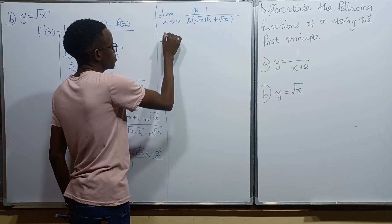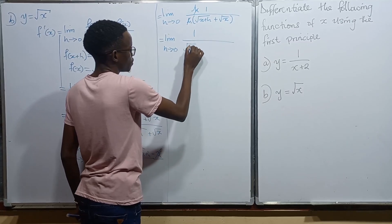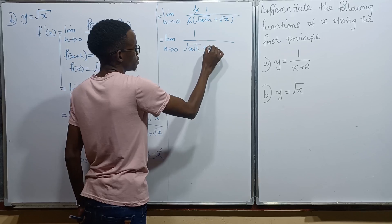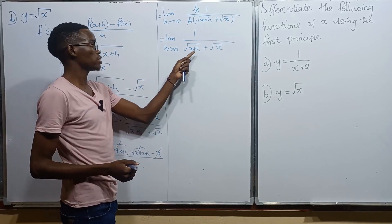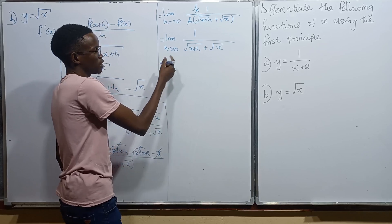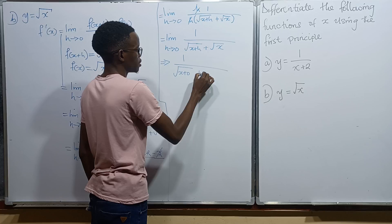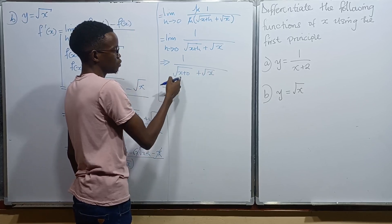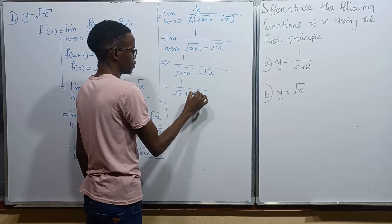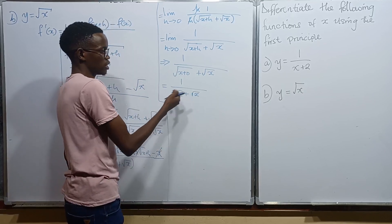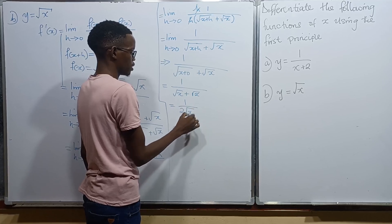We now have the limit as h approaches 0 of 1 divided by (square root of x plus h plus square root of x). We substitute h equals 0 to get 1 divided by (root of x plus 0 plus root of x), which is 1 divided by (root of x plus root of x). Since these are like terms, we add them to get 1 over 2 root of x.